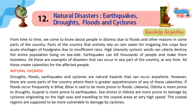From time to time, we come to know about people in distress due to floods and other reasons in some parts of the country. Parts of the country that entirely rely on rainwater for irrigating crops face acute shortages of food grains due to insufficient rains. High-intensity cyclonic winds can utterly destroy the entire population living on the seaside. Earthquakes can kill thousands of people and make them homeless. All these are examples of disasters that can occur in any part of the country, at any time, and create calamities for the affected people.